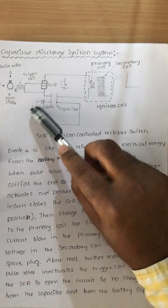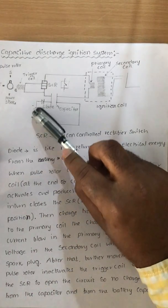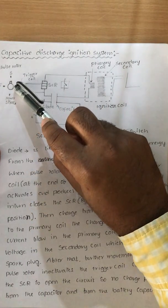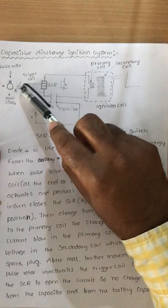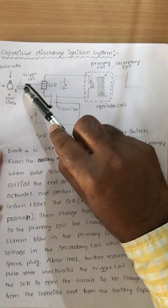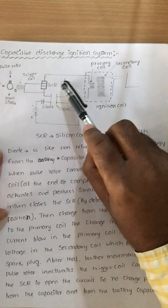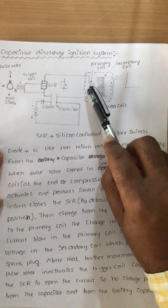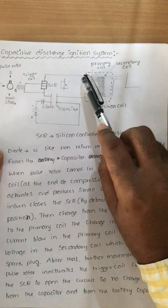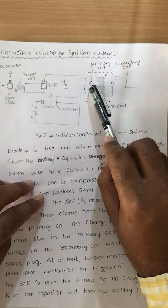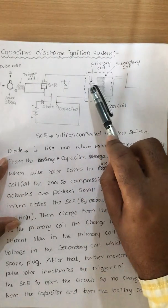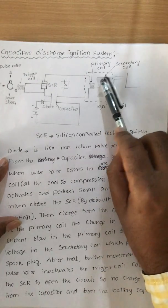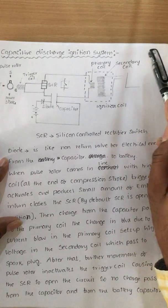At that time, the capacitor is charged again by the battery. Once charged and the pulse rotor rotates so the profile aligns with the trigger coil again, the trigger coil activates and produces a small EMF. This EMF is supplied to the SCR, the SCR closes, and current transfers from the capacitor to the primary coil. The resulting change in flux in the primary coil sets up high voltage in the secondary coil, which is sent to the spark plug.